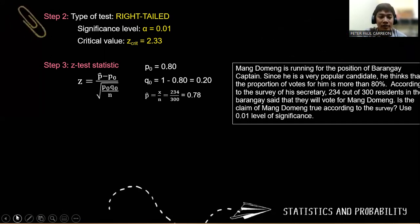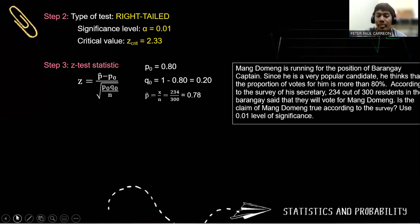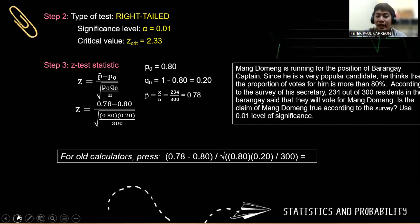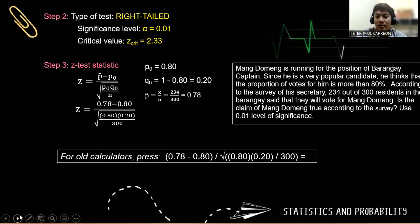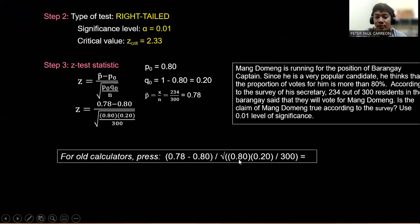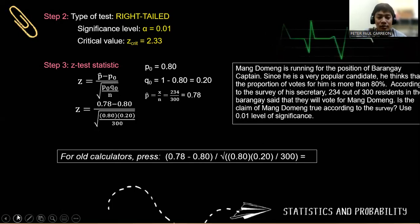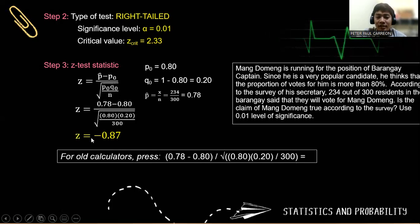Now compute the Z statistic using the formula: P hat minus P sub 0 over the square root of P sub 0 times Q sub 0 over N. Substituting the values: 0.78 minus 0.8 over the square root of 0.8 times 0.2 divided by 300. On a calculator, input open parentheses 0.78 minus 0.80 close parentheses, then divide by the square root of 0.8 times 0.2 over 300. The answer is negative 0.87.